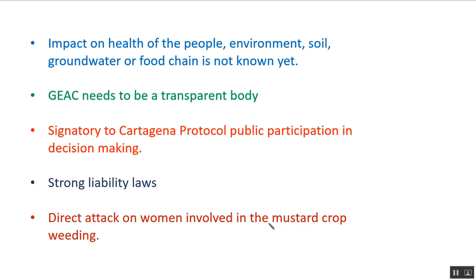GM crops may impact the health of people, environment, and soil. If GM crops produce toxins, they may contaminate groundwater. That is partly why the Supreme Court has not yet given the nod to the GM mustard crop. The results on people's health, environment, soil, and groundwater are not yet known to scientists, which is also why the Supreme Court has not approved it. The GEAC needs to be a transparent body, not a politically influenced one.